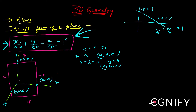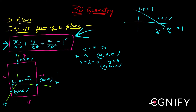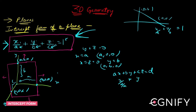So b is the distance where the plane strikes the y-axis from the origin, and c is the distance where it strikes the z-axis. If your plane is given in the general form ax + by + cz = d, you divide through by d to get x/(d/a) + y/(d/b) + z/(d/c) = 1, converting it into intercept form.